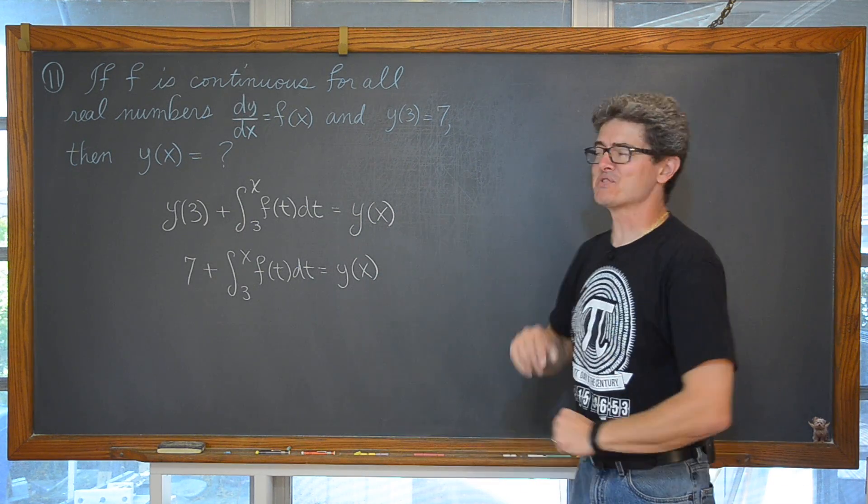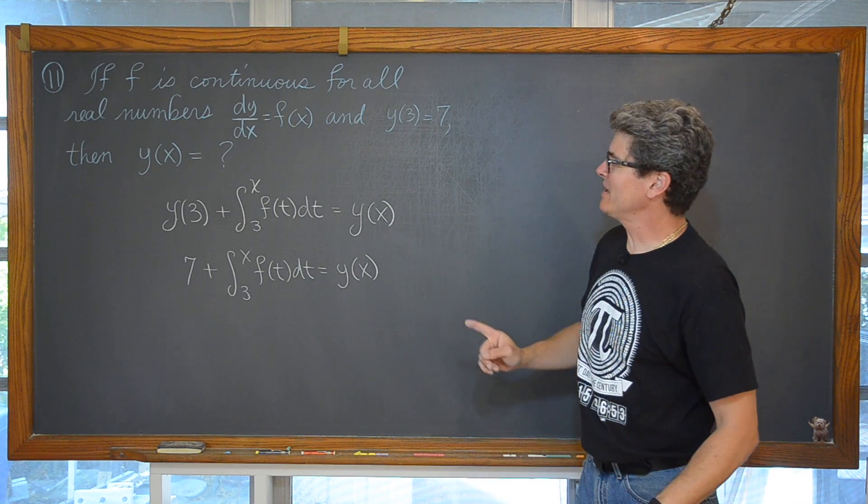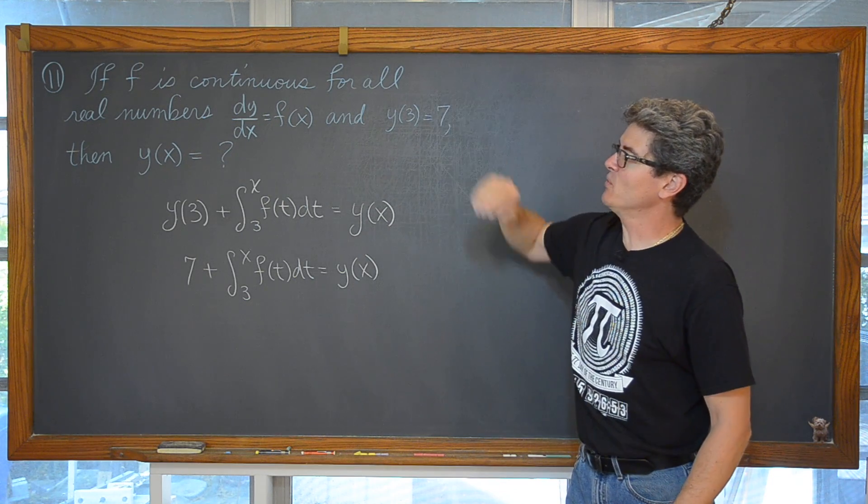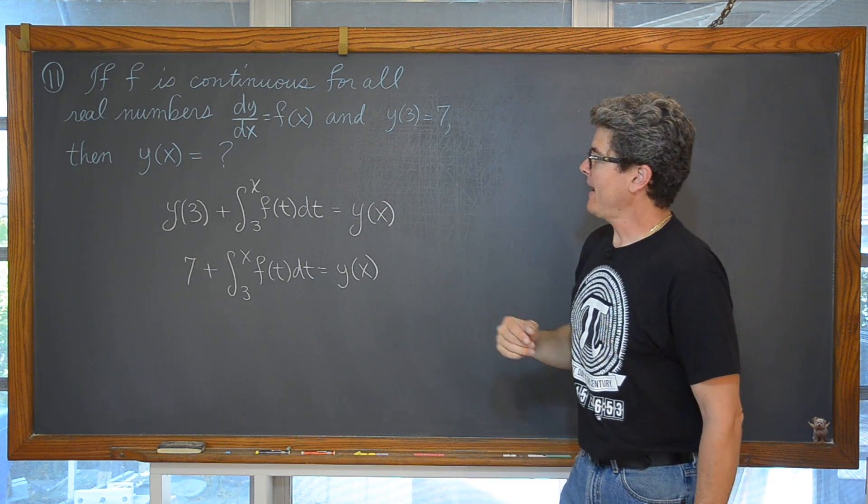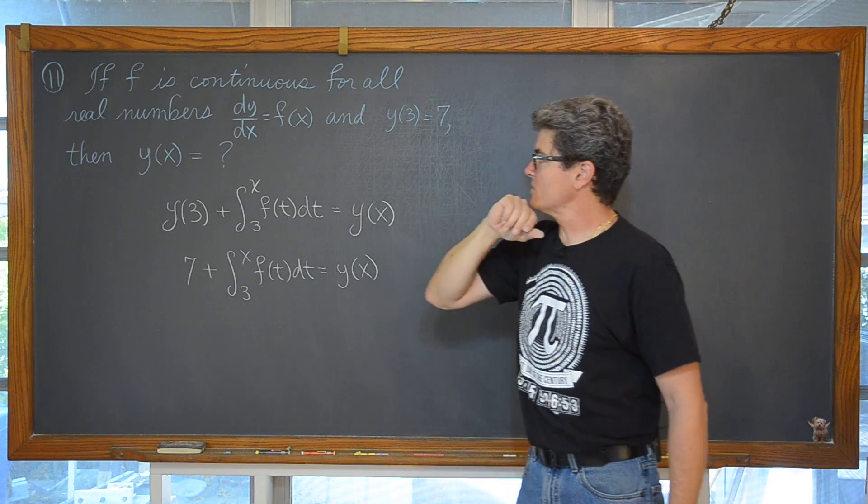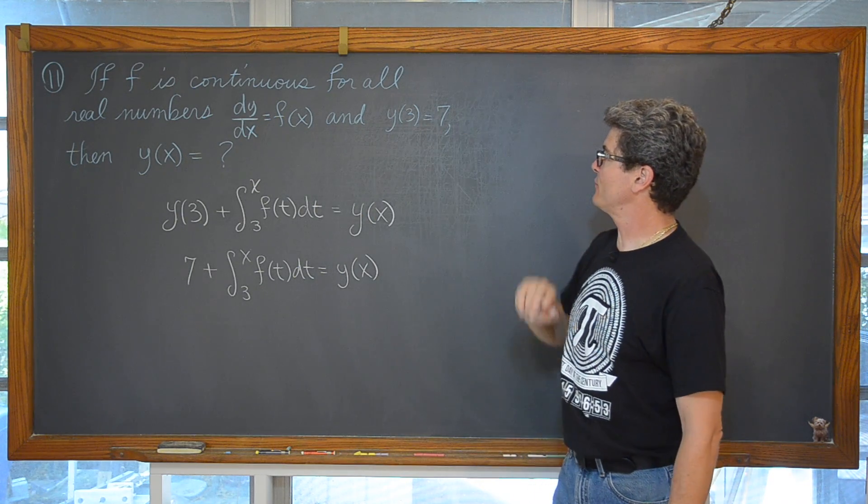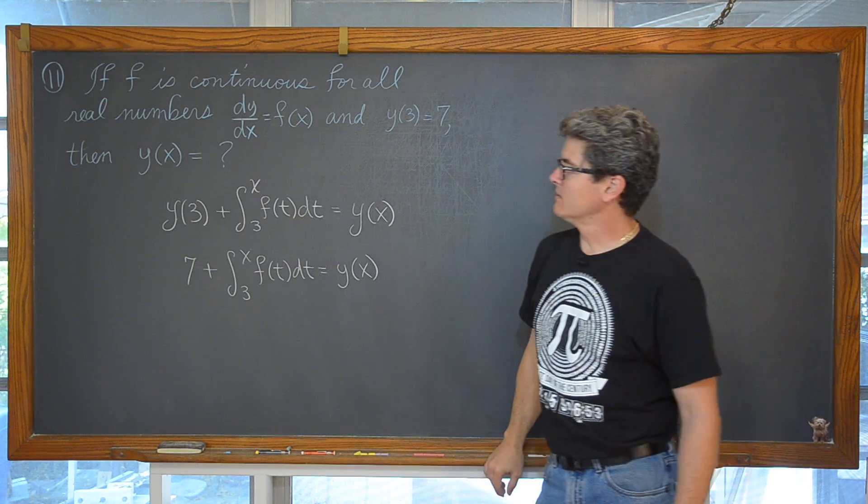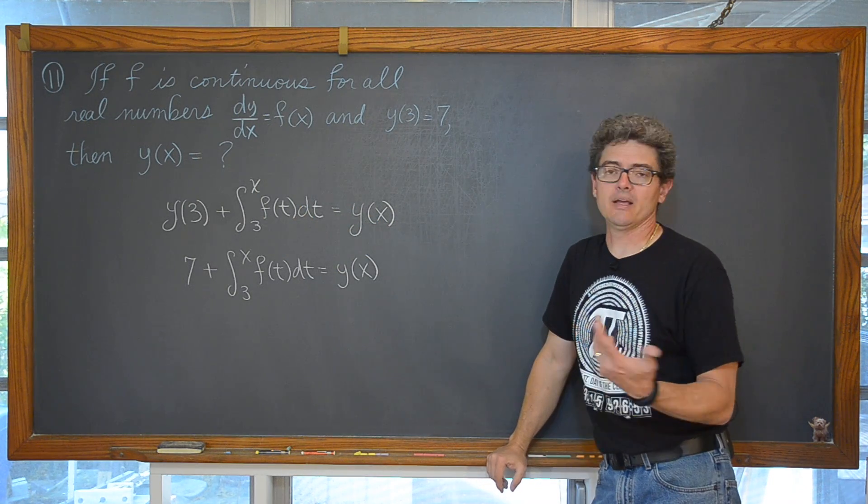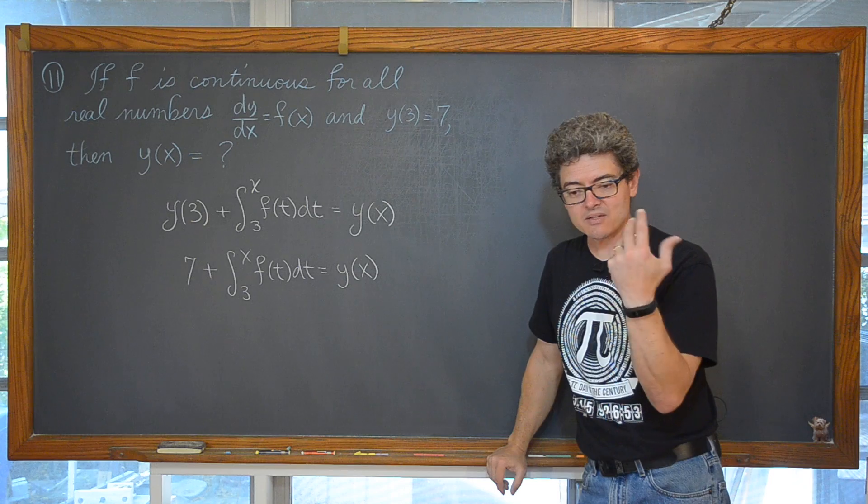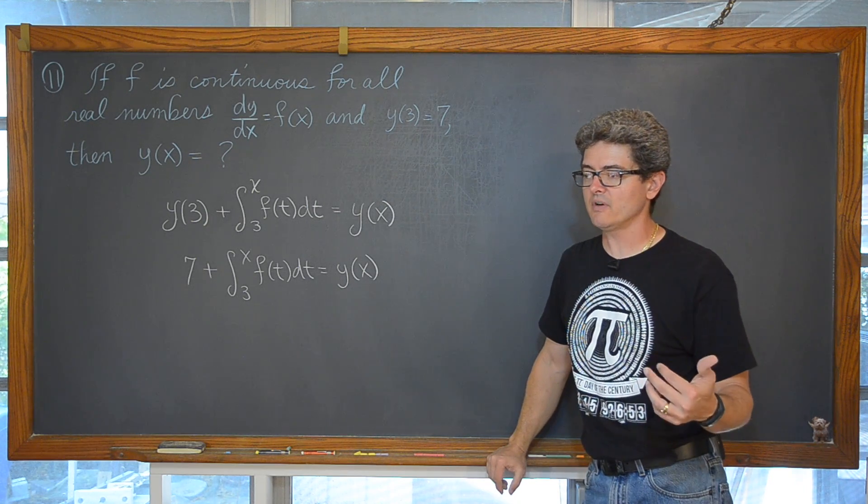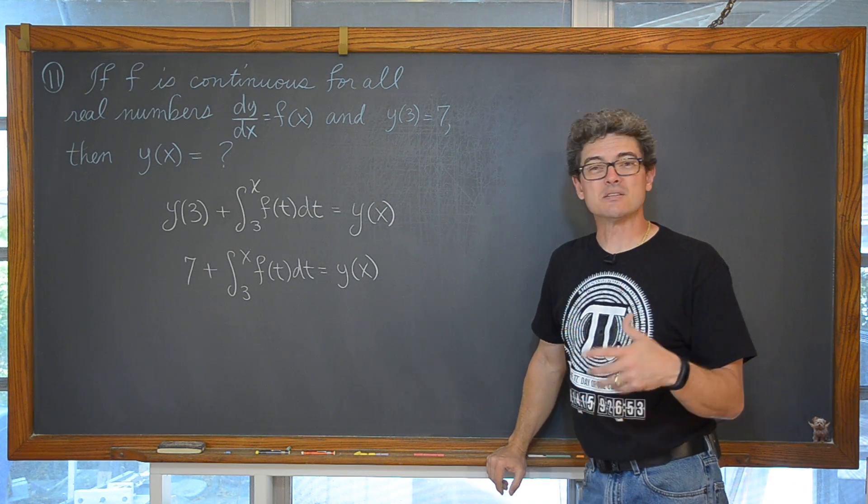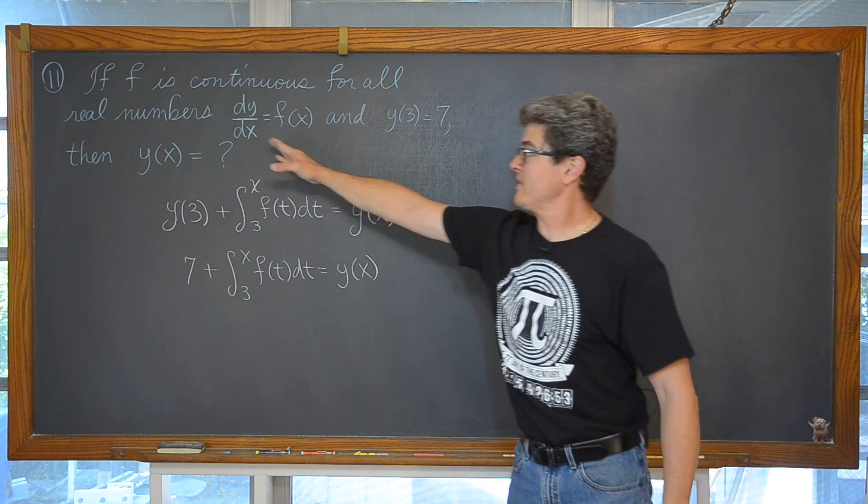And I hope you got that last question right. Let's read that really slowly again. If f is continuous for all real numbers, and dy dx is equal to f and y is equal to 7, then y is equal to what? It doesn't sound like the other problems. They didn't talk about acceleration, which is the derivative of velocity. They didn't say the word anti-derivative, but we do have that notation right there.